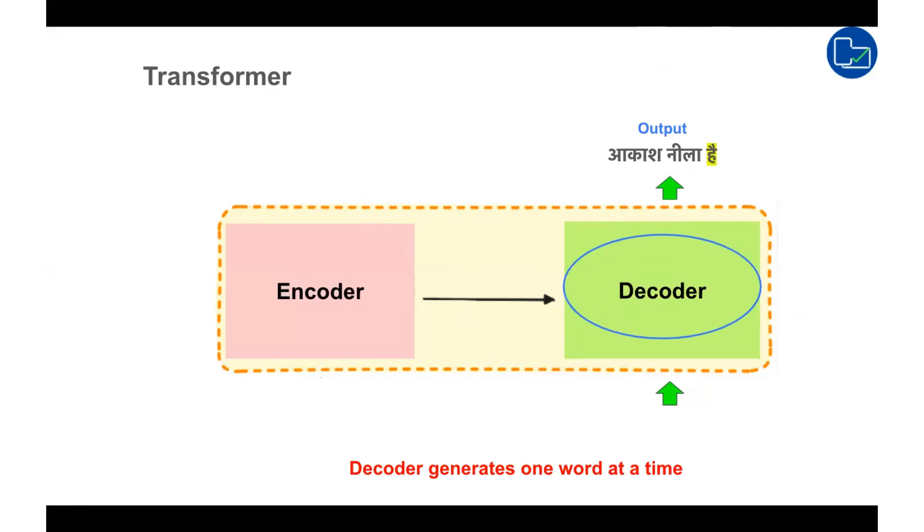You can see at each step of the way, the decoder generates one word at a time in Hindi until the EOS token is predicted, marking the end of the sentence. The final Hindi translation generated by the decoder would look like this.